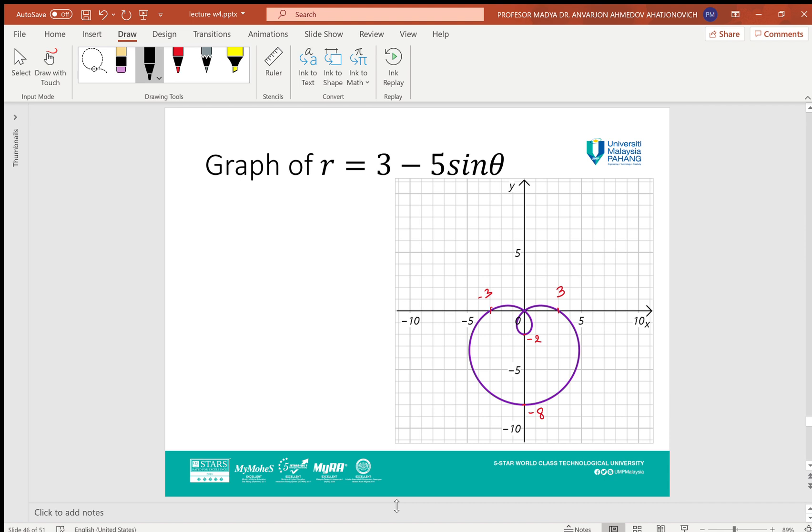Similarly, we can see here r = 3 - 5 sin θ. When θ = 3π/2 or -π/2, it will be -8. When θ = π/2, R is -2, which is making again the loop inside of the limacon.